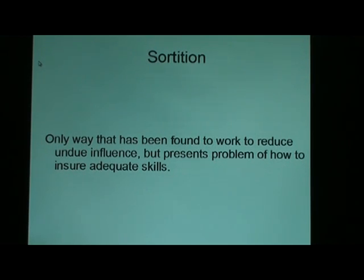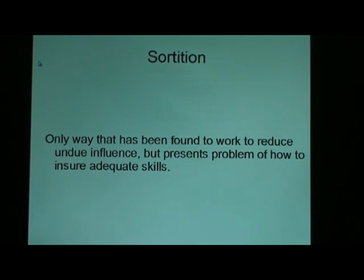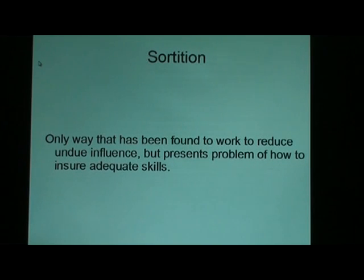Sortition is the only way that has been found to work to reduce undue influence. But it presents a problem of how to ensure adequate skills. If the job to be done requires very advanced skills, then choosing at random from the general population is probably not going to provide the skills that are needed. But as soon as you try to adopt screening methods for screening out low-skilled people, you begin to run the risk that special interests can unduly influence the pools of skilled workers that will emerge. If it's possible to unduly influence everyone who has the skill that's needed, then selecting workers from those with the skills at random won't necessarily help.